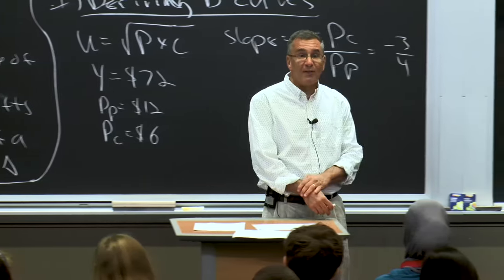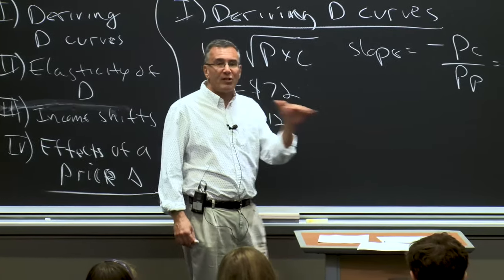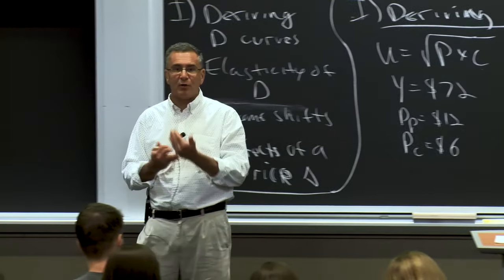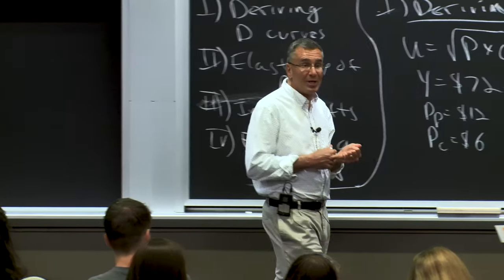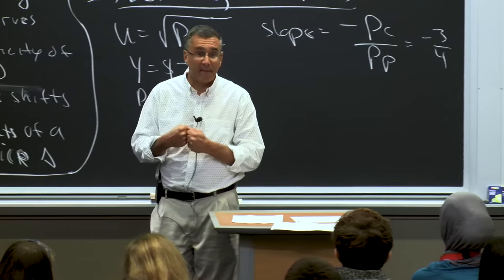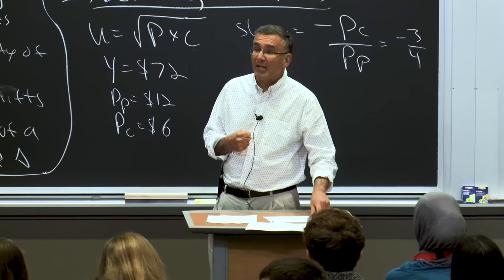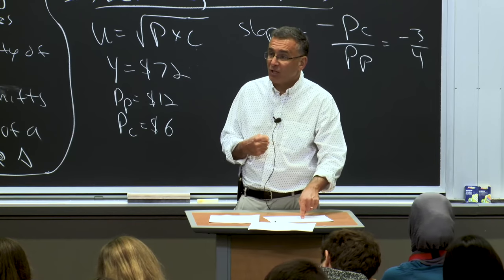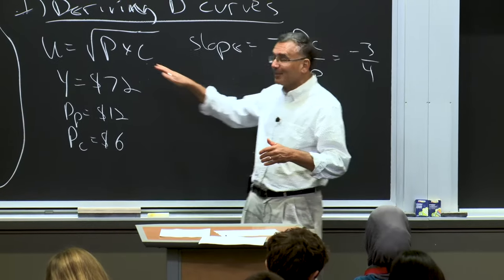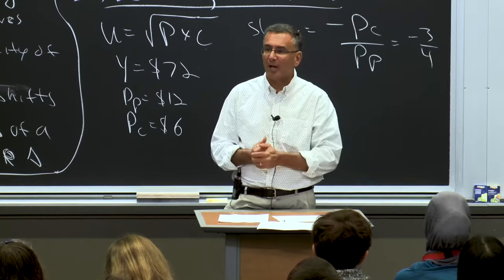This utility function gives what's called the flat price consumption curve — with it, demand for any good is a function only of its own price and your income. But that is not generally true. In general, when you change the price of one good, demand for all goods changes. That's a modeling trade-off: I've chosen a simplified utility function with this nice feature that allowed us to derive a sensible demand curve without introducing other complications.